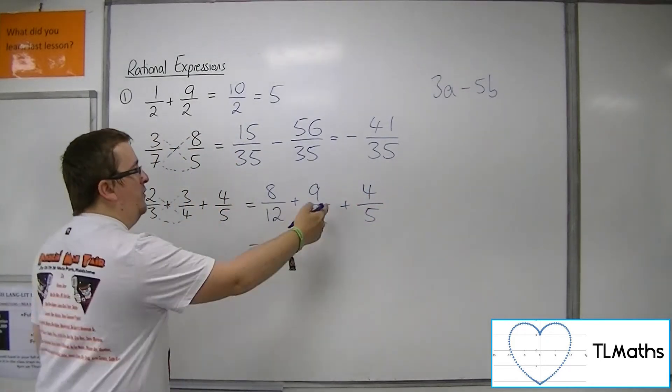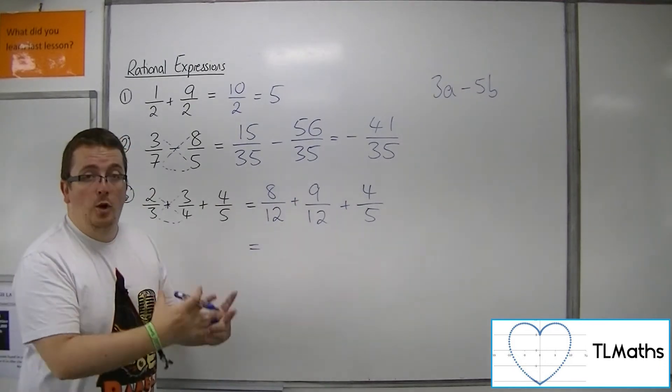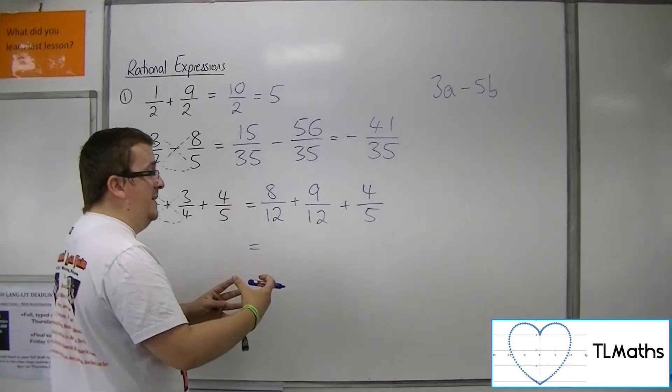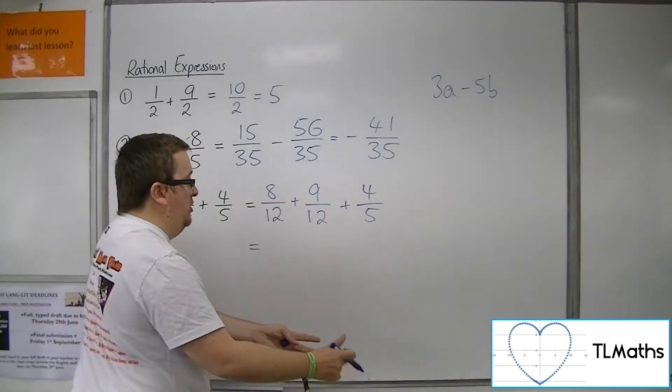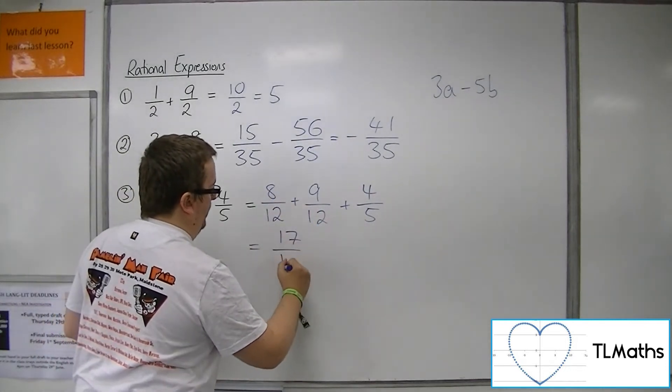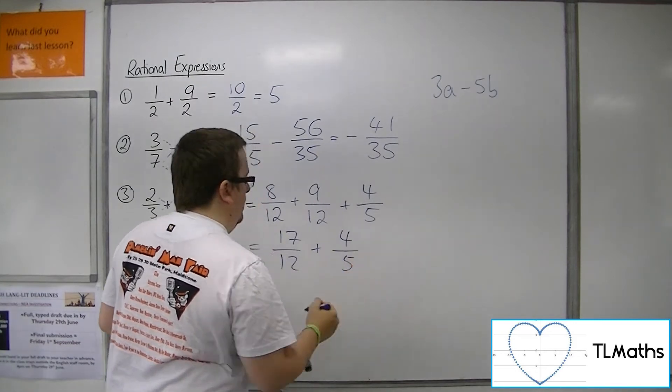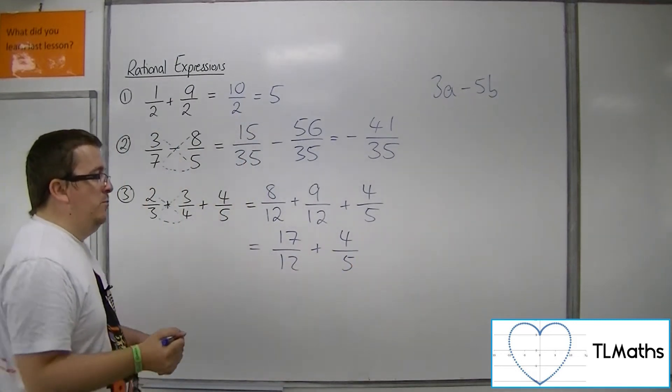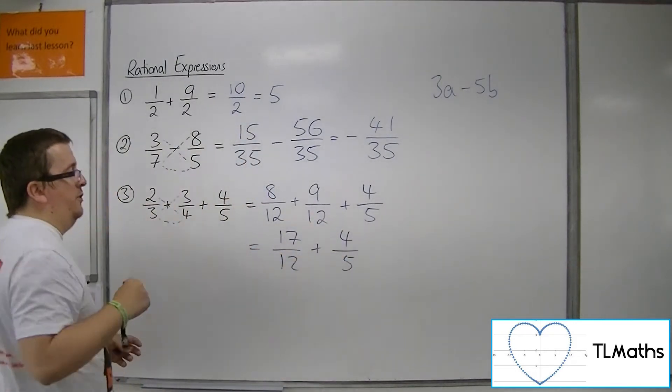So I've got these first two fractions with a common denominator, so I can add them together. 8 12ths and 9 12ths must be 17 12ths.